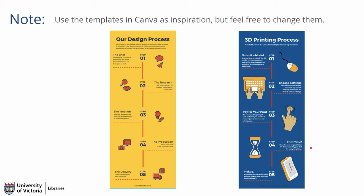This is another example of using templates in Canva. On the left is the template in Canva, and on the right is an infographic created based on that template. The basic layout looks very similar, but the colors have been changed to match the UVic library colors, and the information has also been changed to reflect, in this case, the 3D printing process in the library.